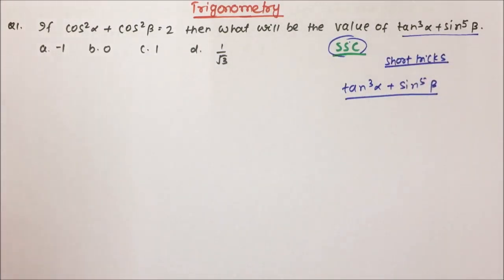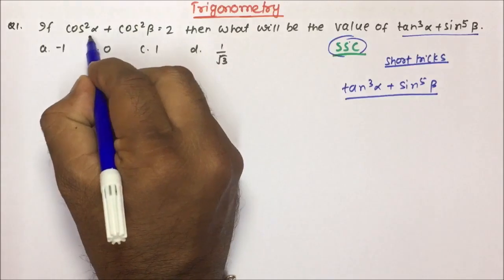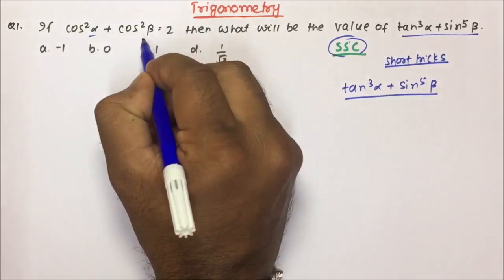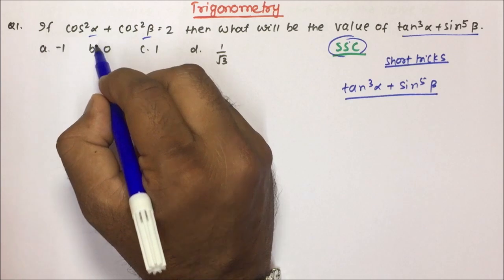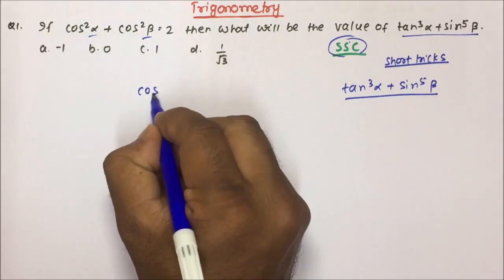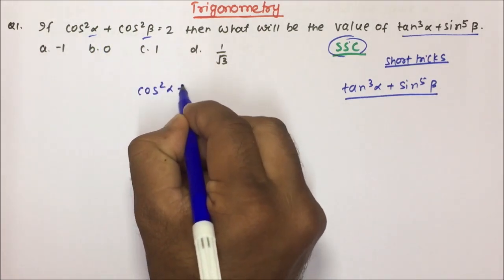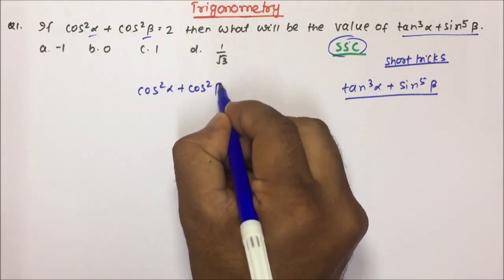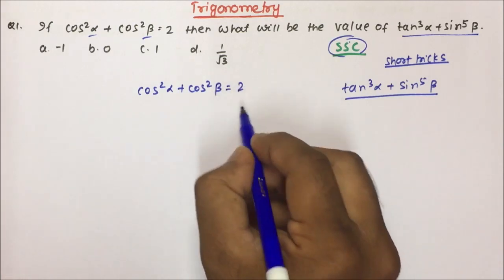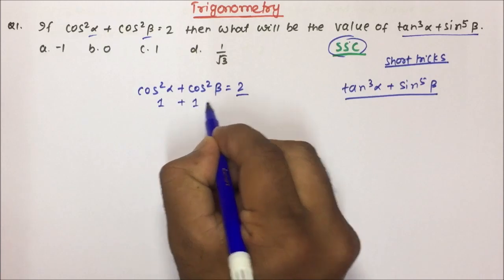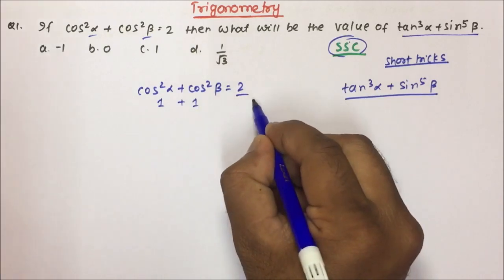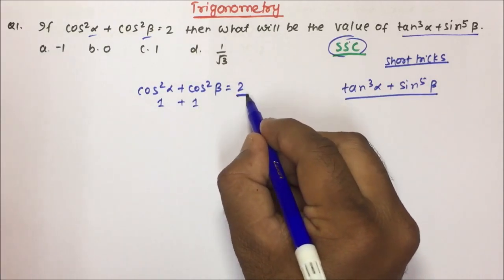So what is the short trick? Generally in Trigonometry, the short tricks will be related to finding out the value of alpha and beta by putting a certain angle. Now, cos²α + cos²β = 2. When will this be equal to 2? Only if cos²α = 1 and cos²β = 1, then we will get the total equal to 2.